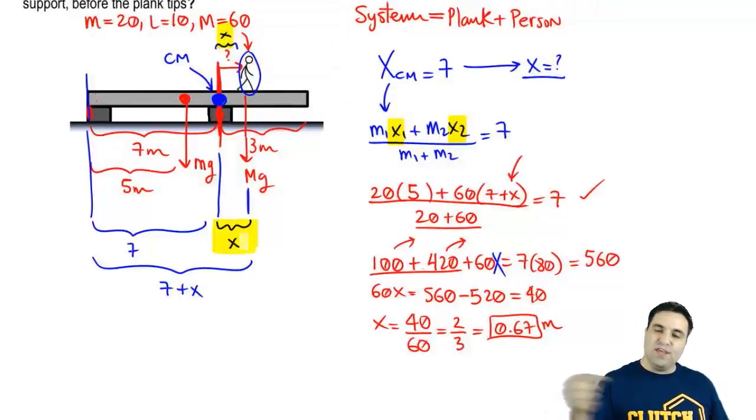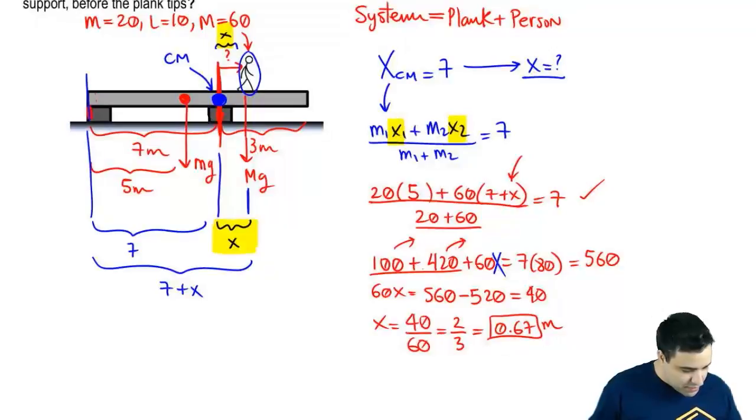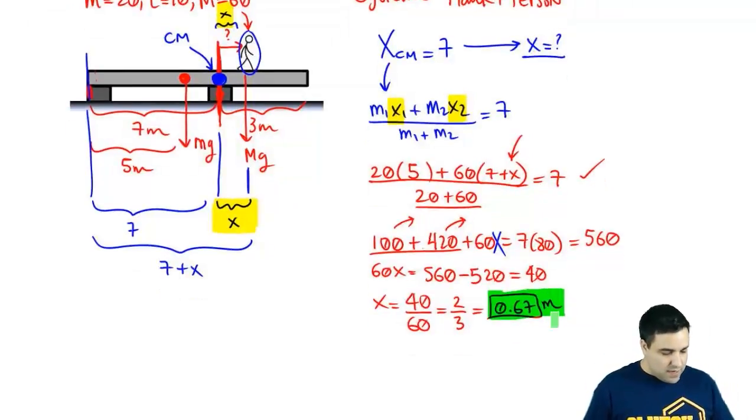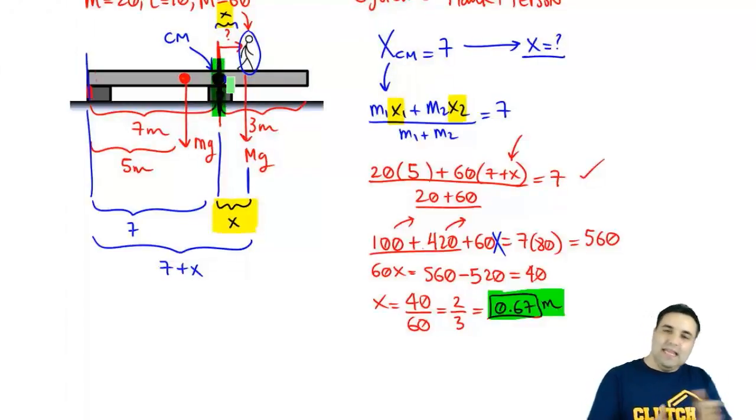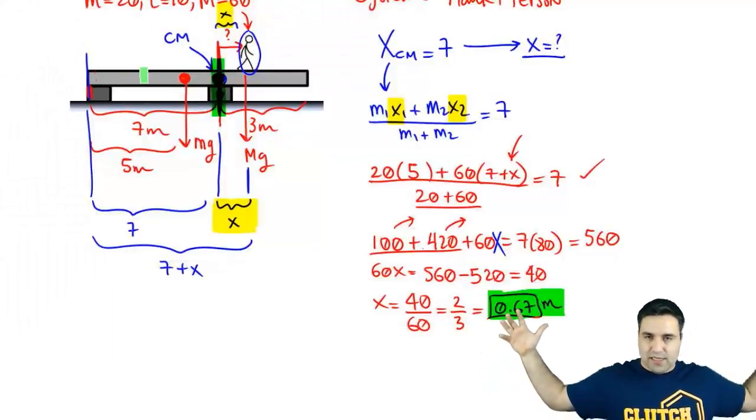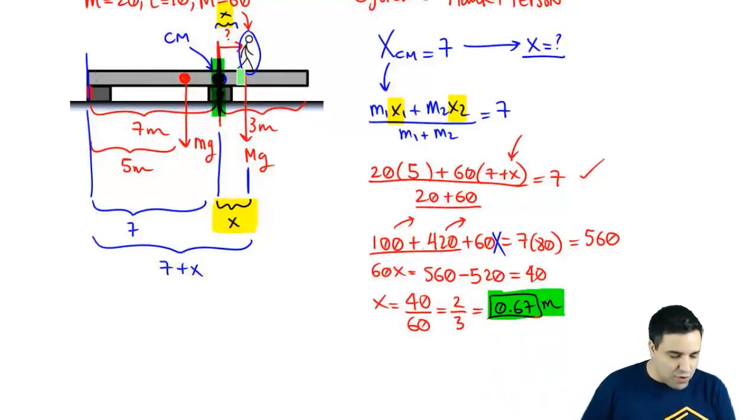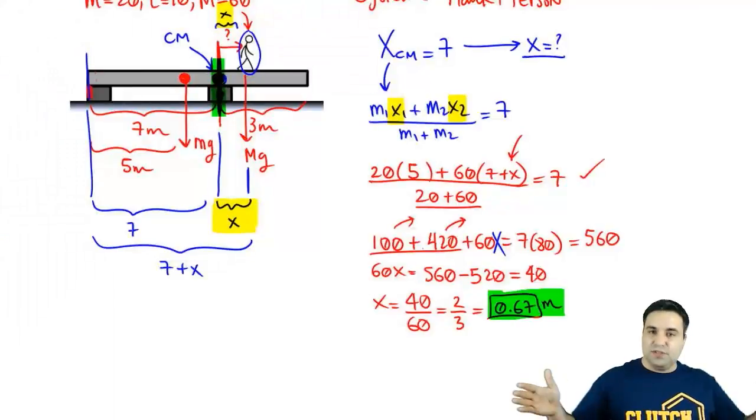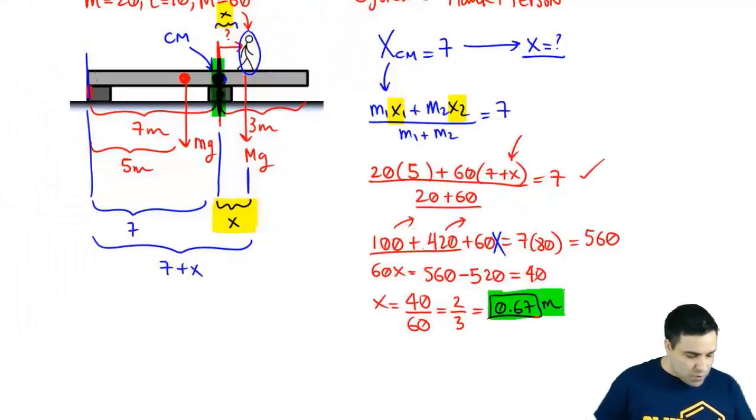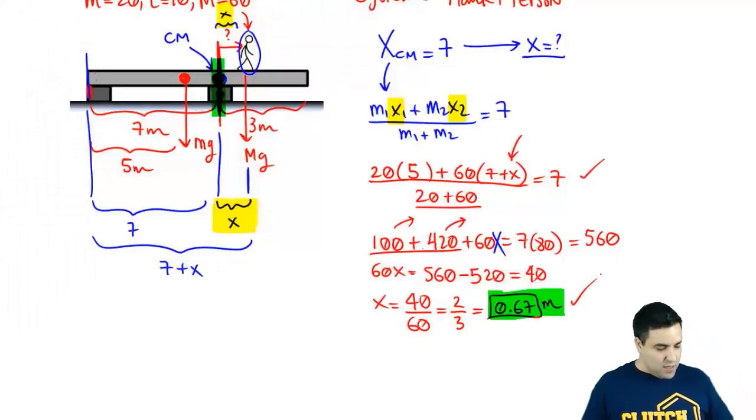That's not much, right? So even though this bar is 10 meters long and it's supported here, the guy can only walk a little bit more. And that's because he's much heavier than the bar. So this should make some sense if you can somehow picture a 10 meter long or a 30 foot long bar. You can only walk a few steps beyond its seven meter point or 70 percent length of the bar before the bar starts tipping if you are much heavier than the bar. All right. So that's it. That's how you would find this and hope it makes sense. Let me know if you have any questions and let's keep going.